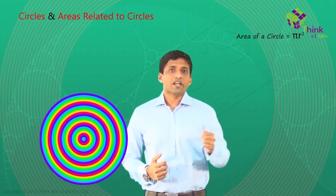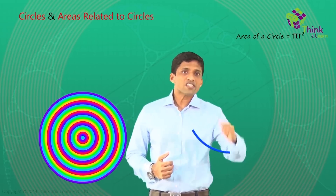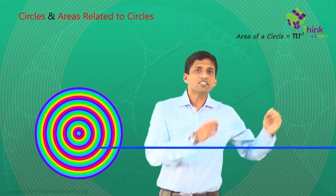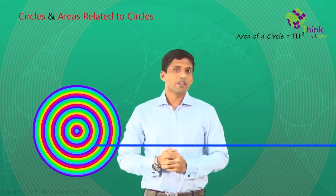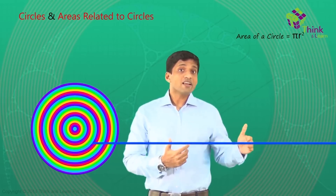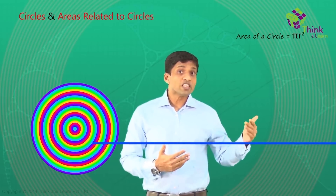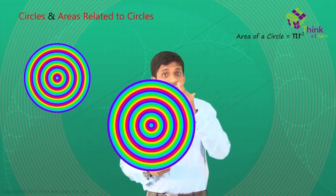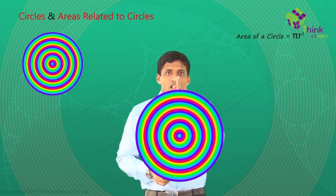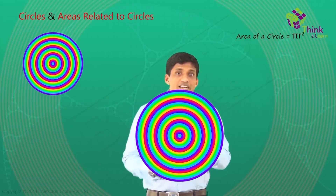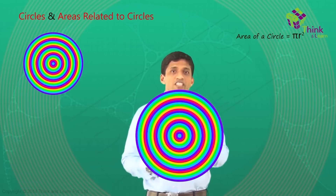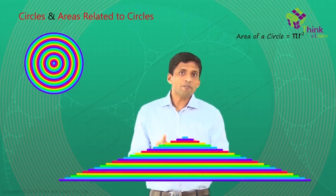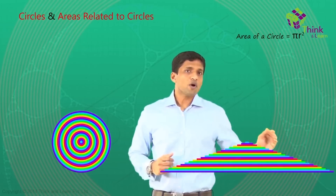Now let's consider the other extreme. If I take a single circle here, and if I cut the circle, if I straighten this out, I will get a straight line. So what is a line? A line can be taken as a circle with infinite radius. If I use the same method here, these set of concentric circles — you can see the colorful circles — if I just cut here, and if I just open it up, and if I keep it here, what's going to happen?